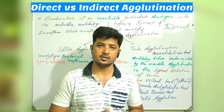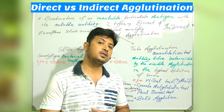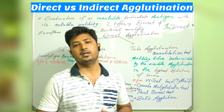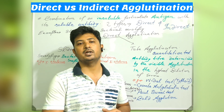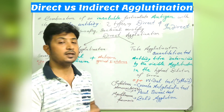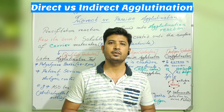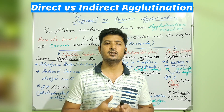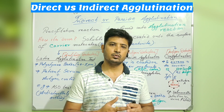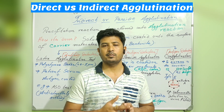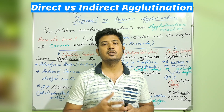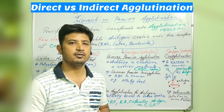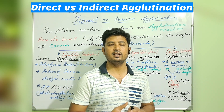Now I will go to the indirect agglutination process, which is essential for explaining how precipitation mechanisms can be converted into agglutination to enhance its effectiveness. In the indirect agglutination test, the principle is to transform the precipitation reaction into an agglutination reaction so that the technician performing the test can easily identify positive and negative results and efficiently report them.